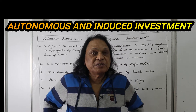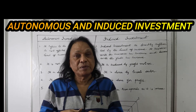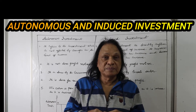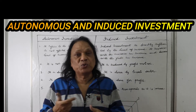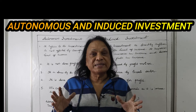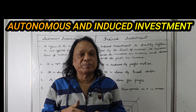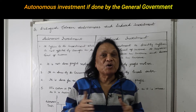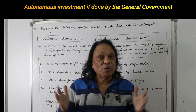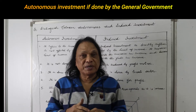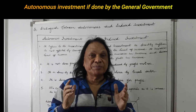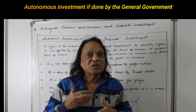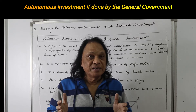Before we read what's written on the board, let me simply explain. 'Autonomous' literally means on its own — it doesn't depend on anything. Autonomous investment is mostly done by the government: providing roads, schools, scientific research institutions, and construction of infrastructure in the economy.